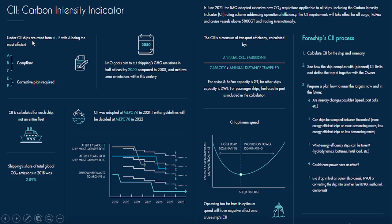In CII, a ship is rated based on its CO2 emission or operational performance, and the rating goes from A to E. A, B, and C are compliant — if your ship falls in category A, B, or C, it is in compliance with CII. But if your ship falls in category D or E, you have to submit a corrective action plan.